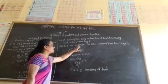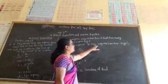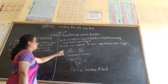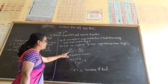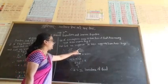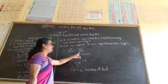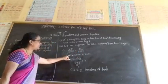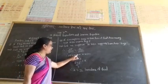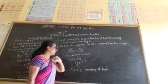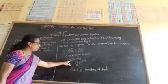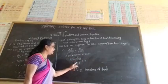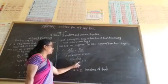Let us suppose 1,180 rupees buys x bunches. We set up the proportion: 50 upon 600 is equal to x upon 1,180. So 50 into 1,180 is equal to x into 600. Therefore x is equal to 50 into 1,180 upon 600.